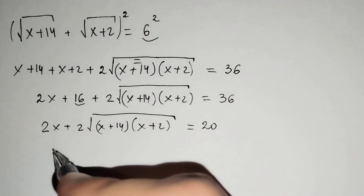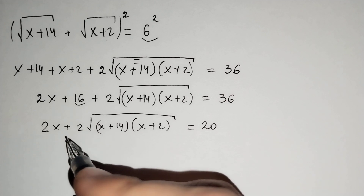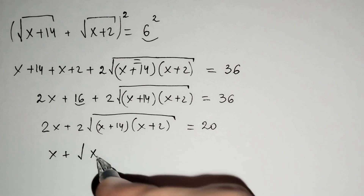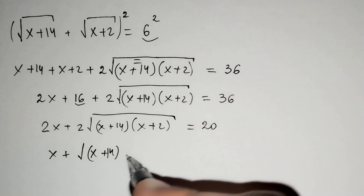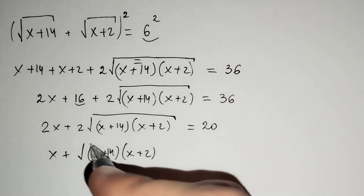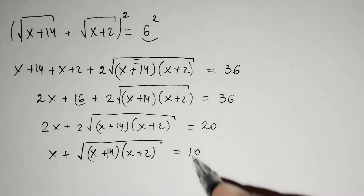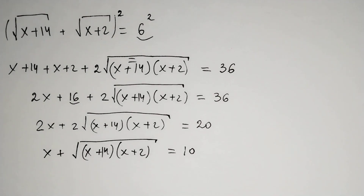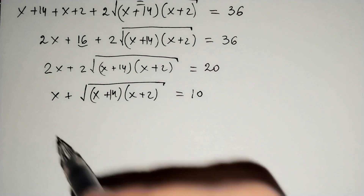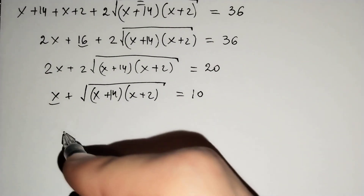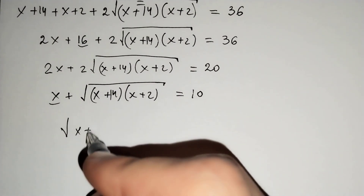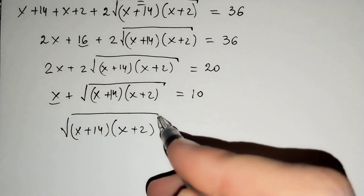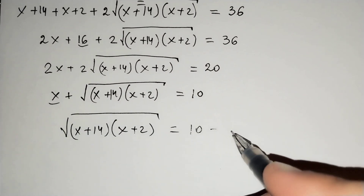We divide both sides by 2: x plus the square root of (x plus 14)(x plus 2) equals 10, since 20 over 2 equals 10. Now let's move x to the other side: the square root of (x plus 14)(x plus 2) equals 10 minus x.